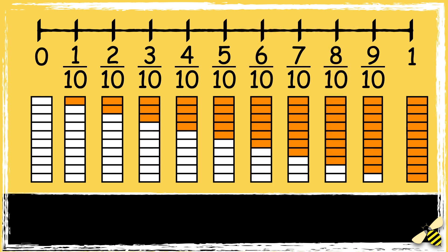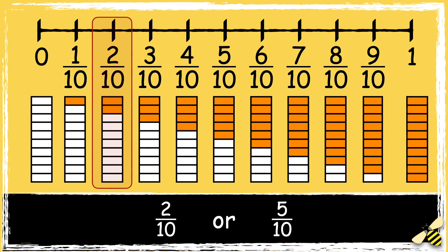Which fraction is greater, 2 tenths or 5 tenths? We can see that on the number line, 2 tenths comes before 5 tenths. So 2 tenths is less than 5 tenths.